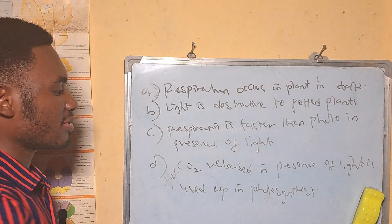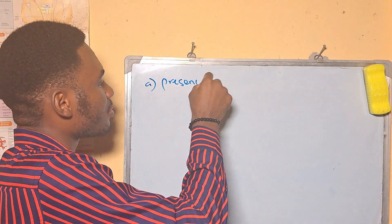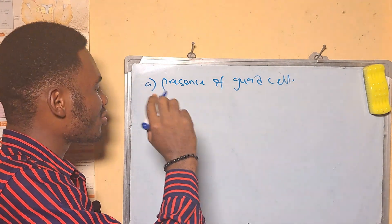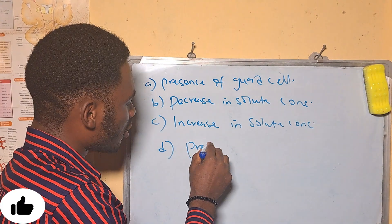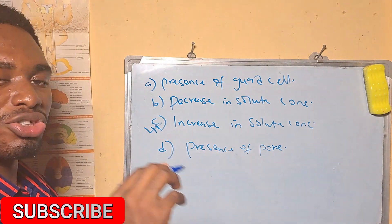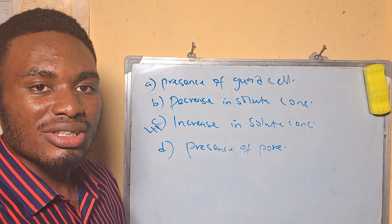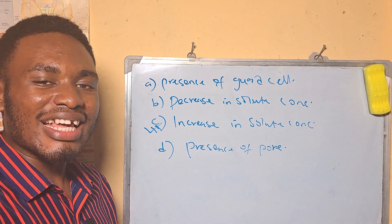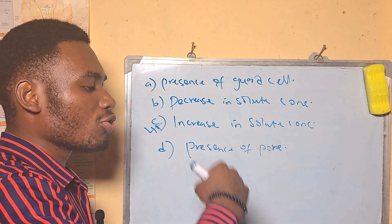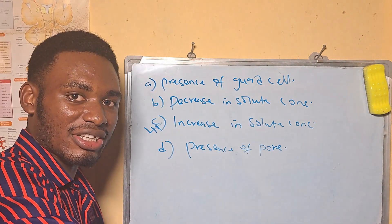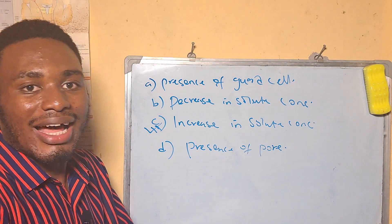The opening of the stomata is controlled by — A: presence of guard cells, B: decreased solute concentration, C: increased solute concentration in guard cells, D: presence of water vapor. The answer is C — when the solute concentration of the guard cells increases, water molecules enter by osmosis, the cells become turgid, and the stomatal opening increases, causing the stomata to open up for respiration in plants.